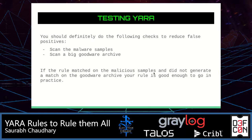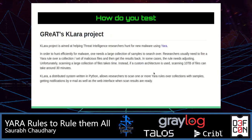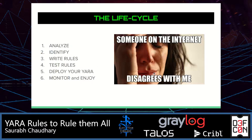Coming to testing YARA rules. You should definitely do the following checks to reduce false positives: scan the malware samples, then scan a big goodware sample set. If the rule matches the malicious sample but does not generate a match on the goodware archive, then you're good. If it does match goodware, the rule is not good enough for production because it has a false positive. Kaspersky's Red Team has a project named Clara — this is a very nice project to test YARA rules before going to production. This is the life cycle of a YARA rule: analyze, identify, write rules, test rules, deploy, and enjoy.